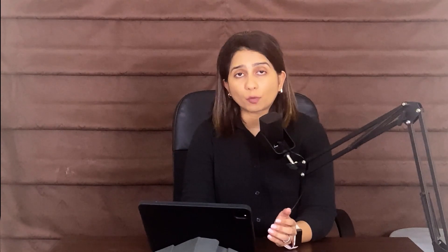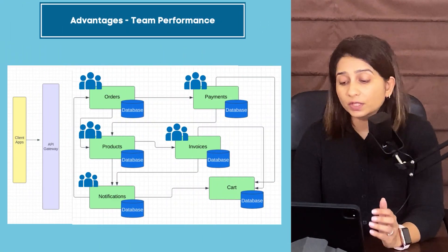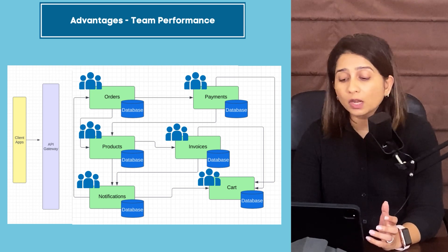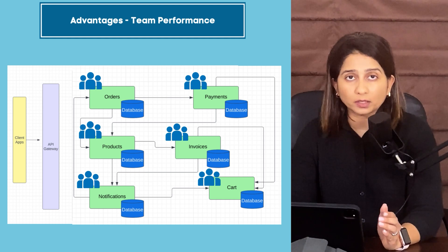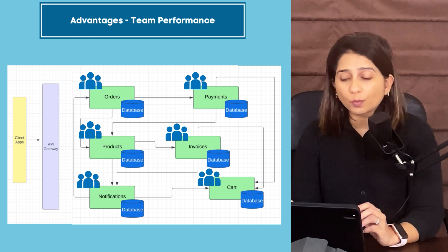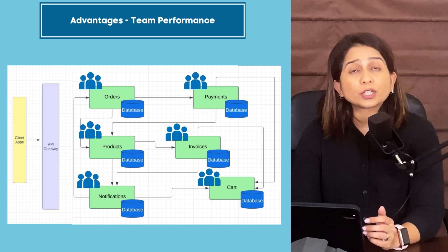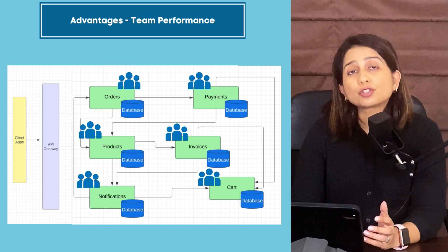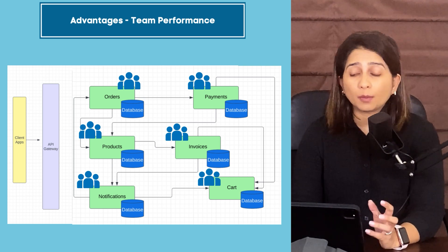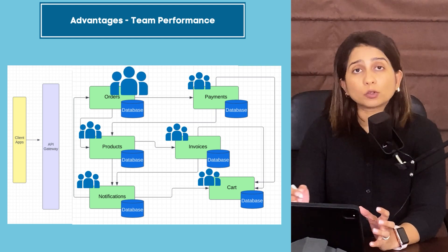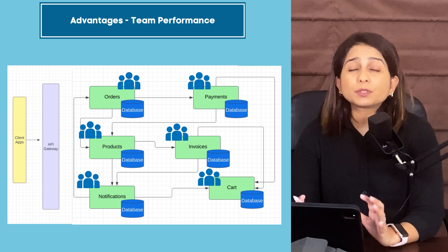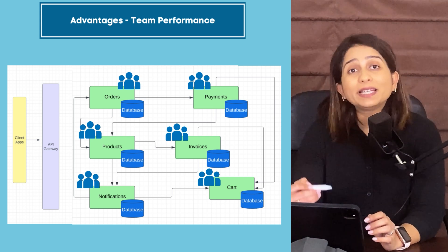Microservices also improve team performance. Small teams working on different services can run changes in parallel, building multiple features simultaneously with fewer code conflicts, easier code reviews, and faster overall delivery. Teams can be diverse in skill sets and swapped according to expertise, giving people more opportunities to grow. Communication is also streamlined — the orders team only needs to talk to stakeholders close to that domain, not to teams working on unrelated services like cart, which speeds up delivery further.